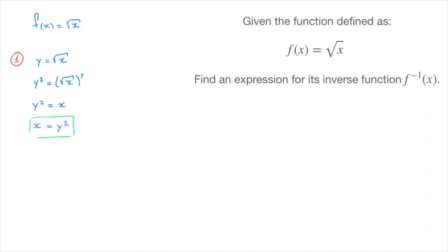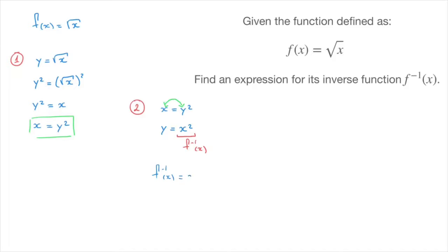We move on to step 2. We start from the result we just found, which was x equals y squared, and we swap x and y — x turns into y and y turns into x — so that gives y equals x squared. The expression on the right-hand side is the inverse function of f, so the final answer is: the inverse function of f equals x squared.